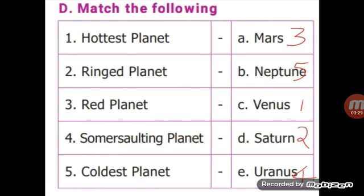Next, match the following. Hottest planet: Venus is the hottest planet. Ringed planet: Saturn is the ringed planet. Red planet: Mars is the red planet. Somersaulting planet: Uranus is the somersaulting planet. Coldest planet: Neptune is the coldest planet.